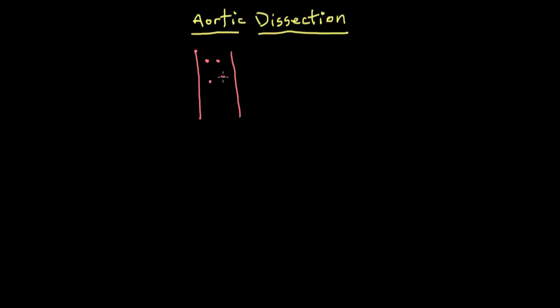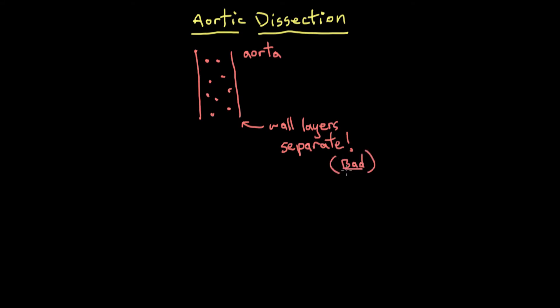An aortic dissection is a life-threatening condition where there's a separation of the layers in the wall of the aorta. Now, in case that doesn't quite make sense to you, let's go over some background information.